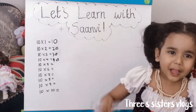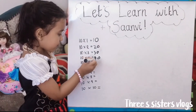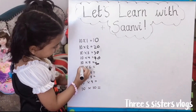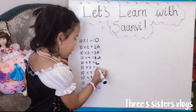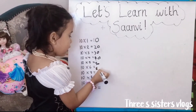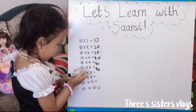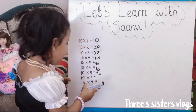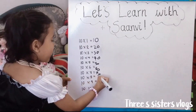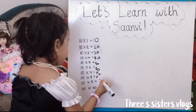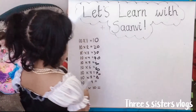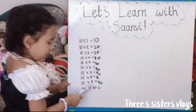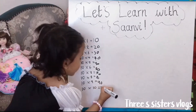So every time you add 10. 10 times 5 equals 50. 10 times 6 equals 60. 10 times 7 equals 70. 10 times 8 equals 80. 10 times 9 equals 90. 10 times 10 equals 100.